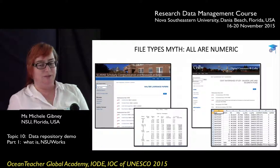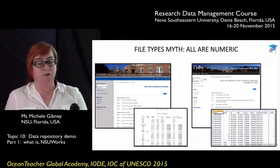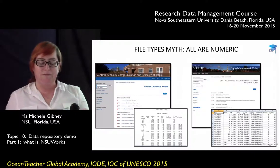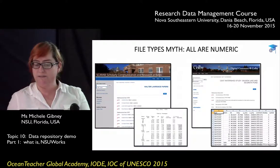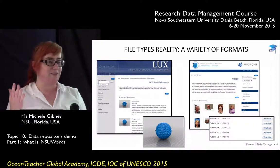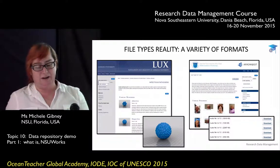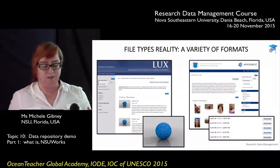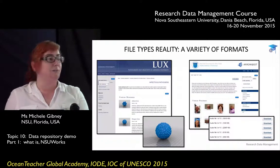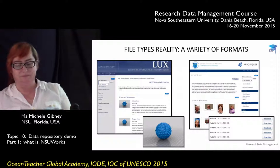Another thing you might run into is people assuming all file types in data sets are numeric, but that's not true. Examples from Bates College and Colby College are CSV and Excel files, but data sets come in all sorts of file types. On the left is an example from Lawrence University where the files are for 3D printers — for modeling viruses and proteins — and you can download them, upload to your own 3D printer, and print them out. That's one type of data file that exists.